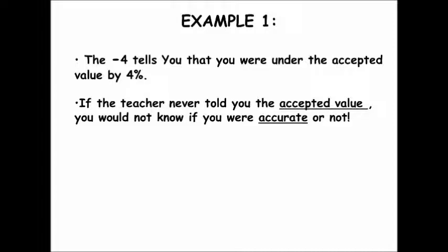If the teacher never told you the accepted value, you would not know if you are accurate. You can treat that accepted value as though it's the bullseye and you're shooting an arrow at it. If you don't hit that bullseye, you're not accurate. If you hit the center, you're 100% accurate. The further you are from the bullseye, the less accurate you are. If you're under the accepted value, it's negative; if you're over, it would be positive.